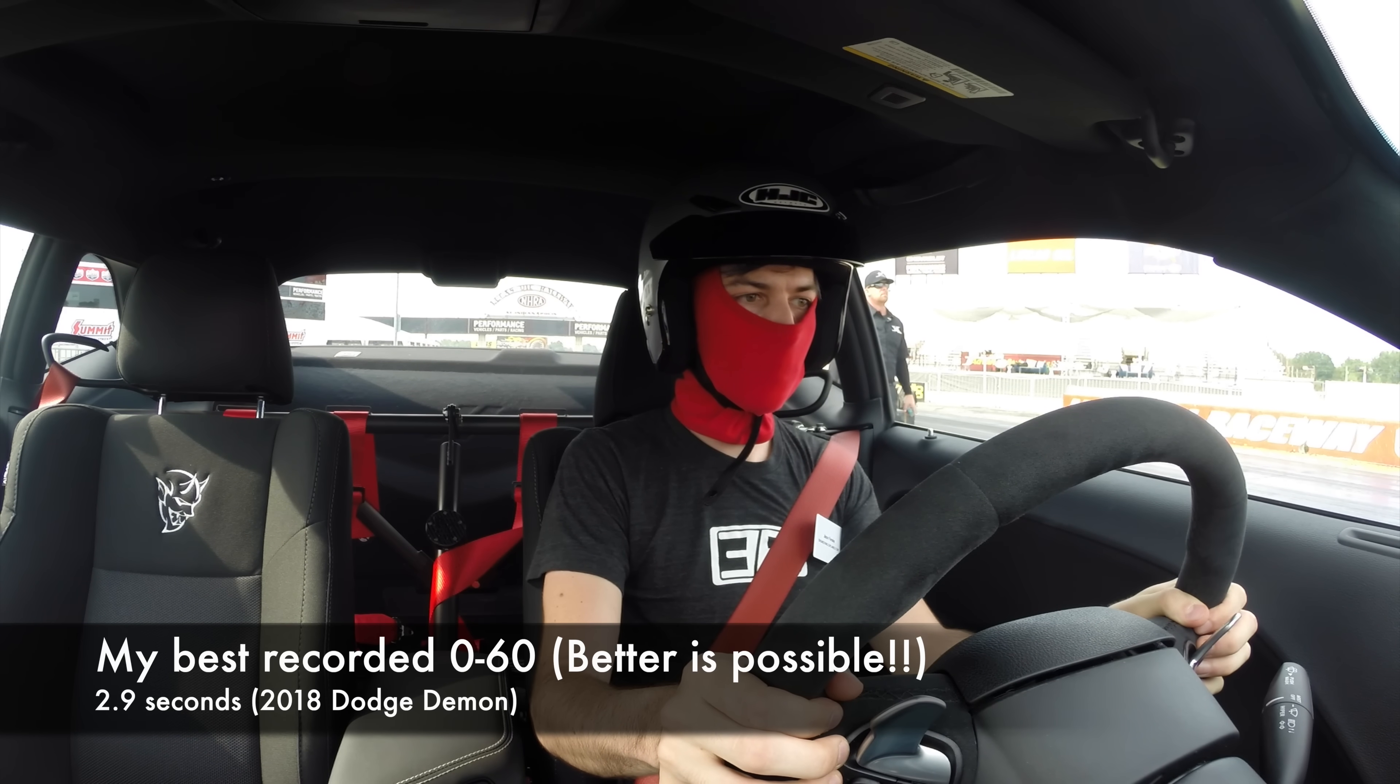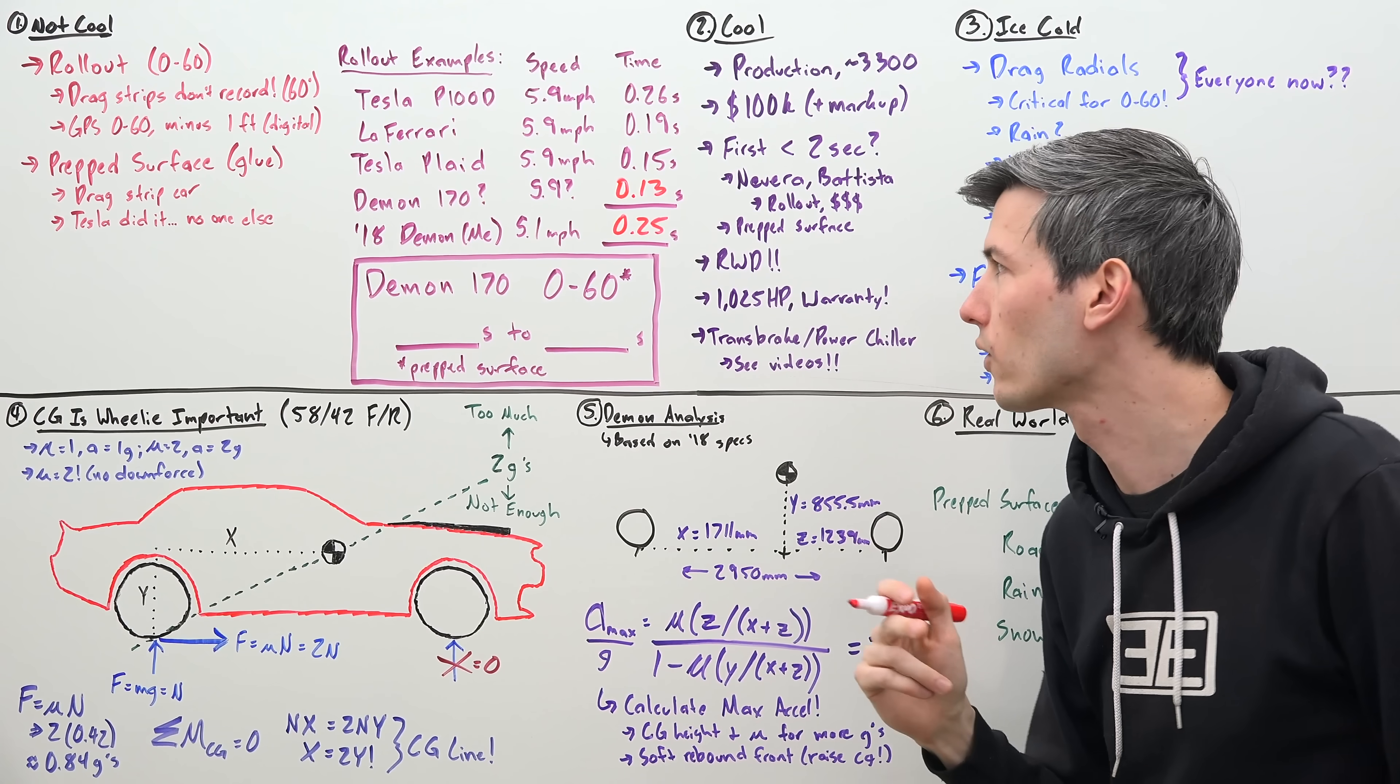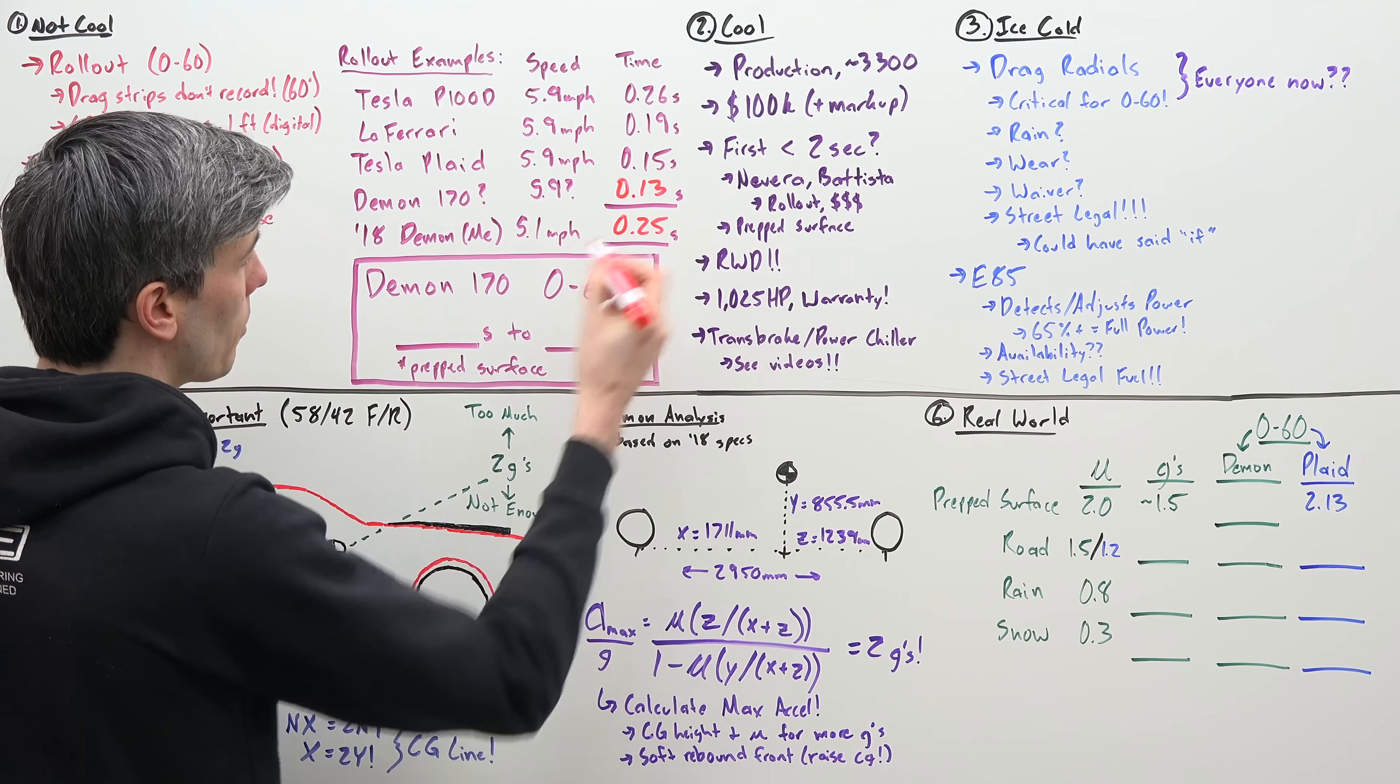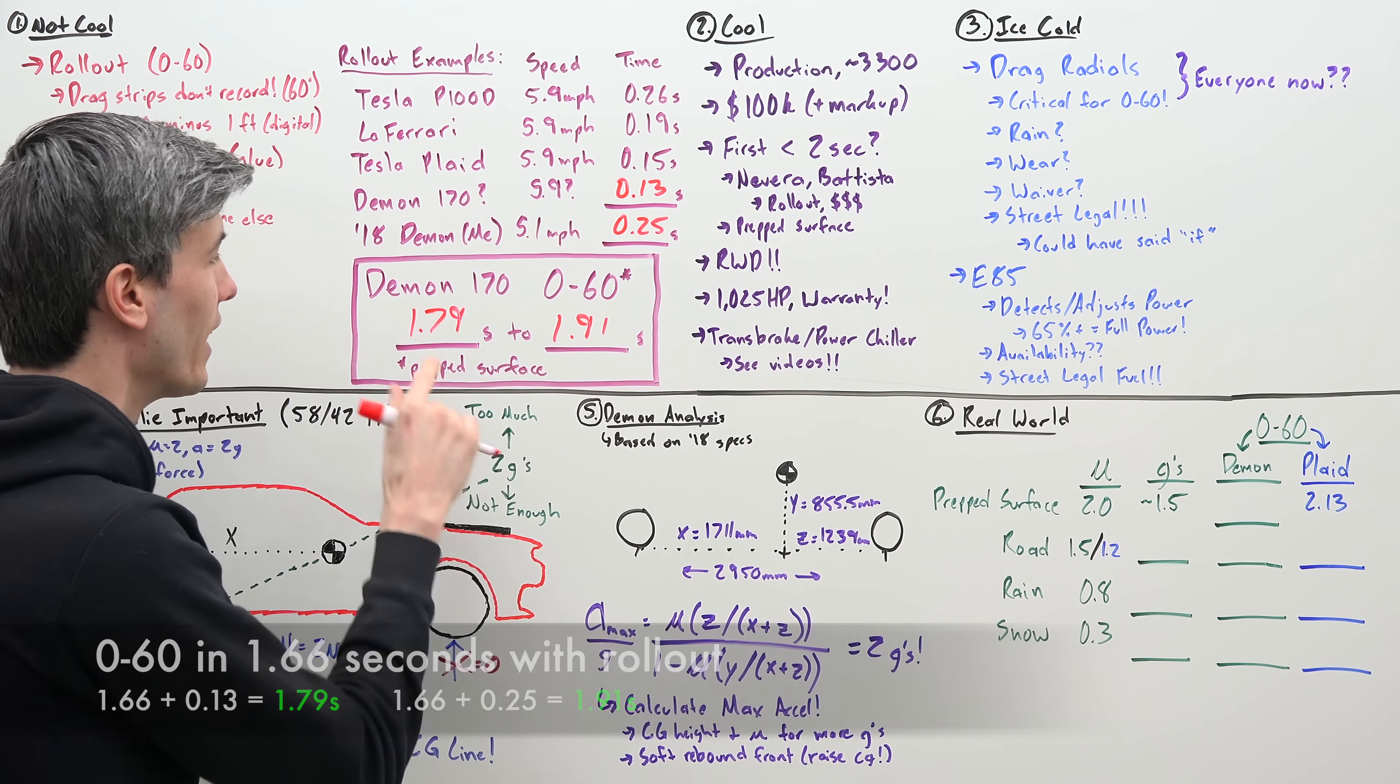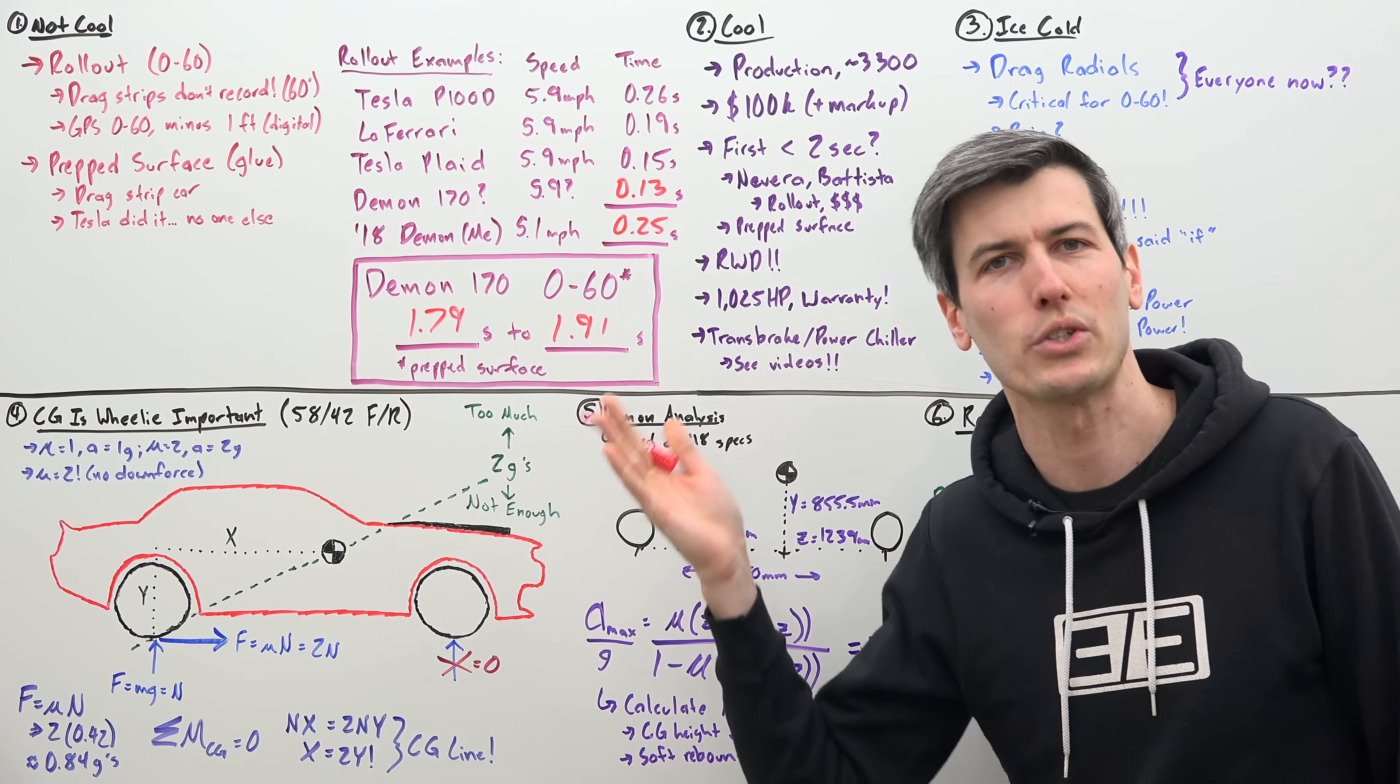The Demon 170 is supposedly capable of 2 Gs. So if you were to plug in accelerating from 0 to 5.9 miles per hour at 2 Gs, that would give you just 0.13 seconds. Now, my own time in the previous Dodge Demon, which was not good, I accelerated in that first foot to 5.1 miles per hour in 0.25 seconds. So the actual 0 to 60 for the Dodge Demon on a prepped surface is going to lie somewhere between a 1.79 to a 1.91 second below 2 seconds, which is extraordinary.